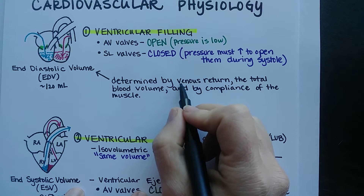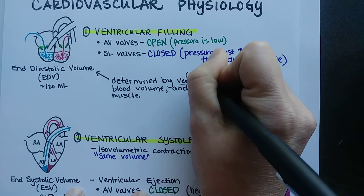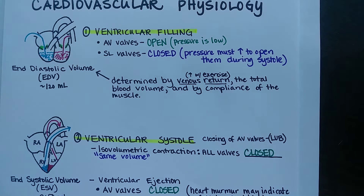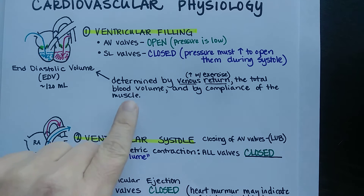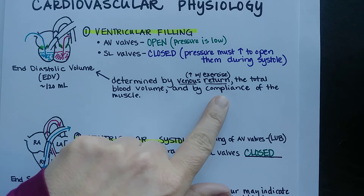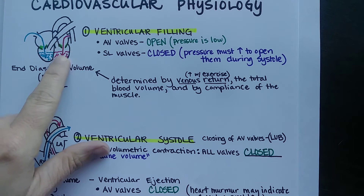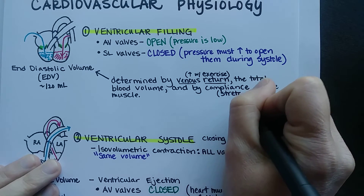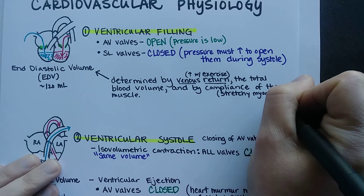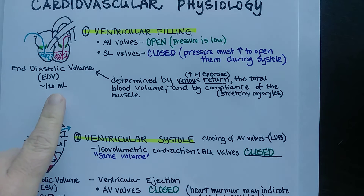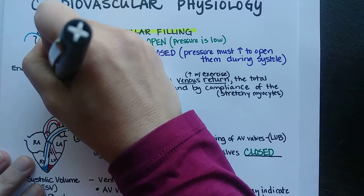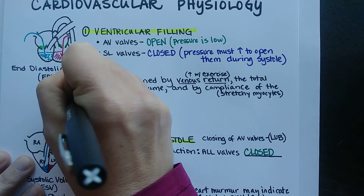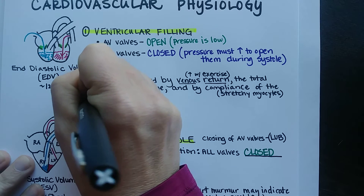End diastolic volume is increased by exercise because skeletal muscles pump blood back to the heart. If someone is well-hydrated, they have plenty of blood volume to return. And if the cardiac myocytes are very stretchy — meaning high compliance — the ventricle can fill well. End diastolic volume is sometimes used interchangeably with the term preload.